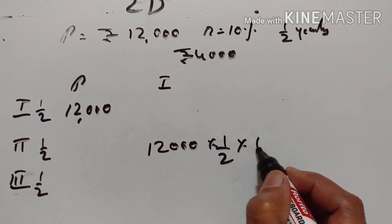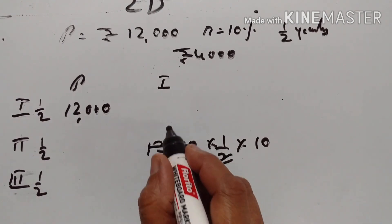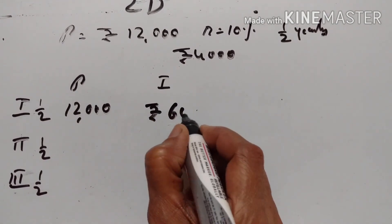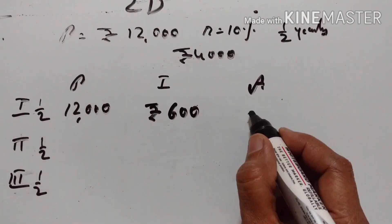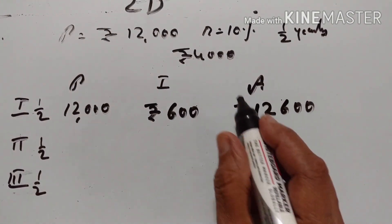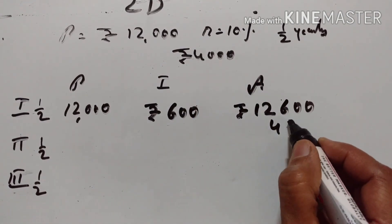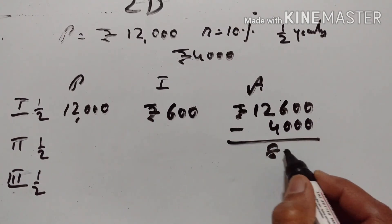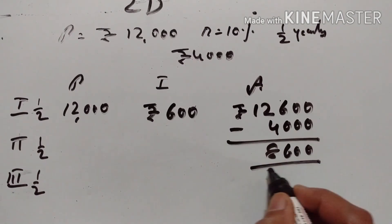Time: rate is equal to 10%, so the interest for the first 6 months is Rs. 600. The amount at the end of 6 months is equal to Rs. 12,600. She makes a payment of Rs. 4,000, so what remains is Rs. 8,600.